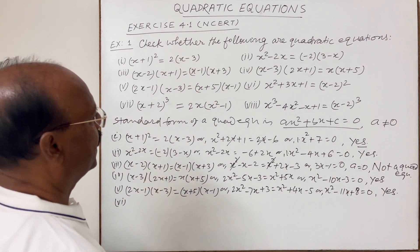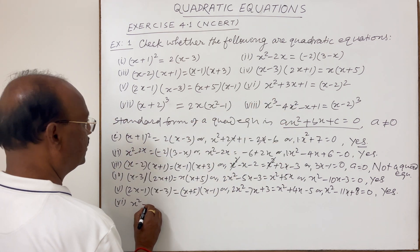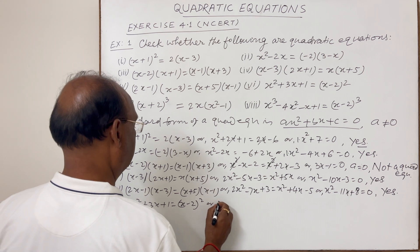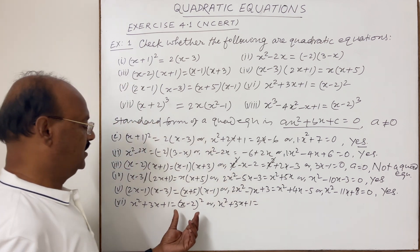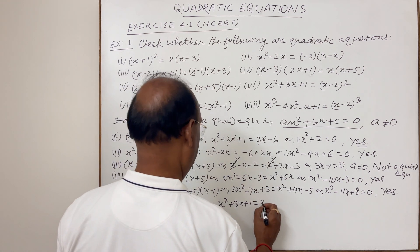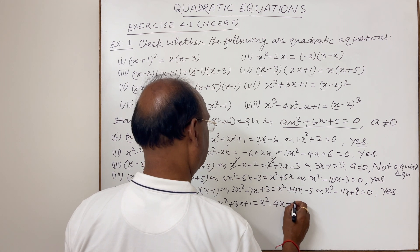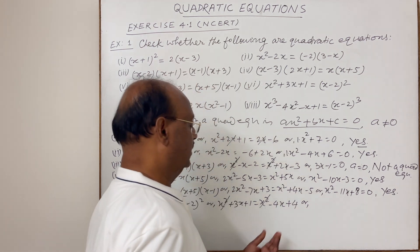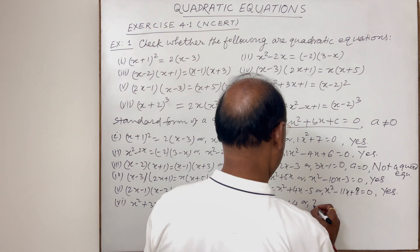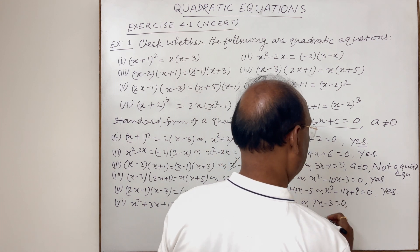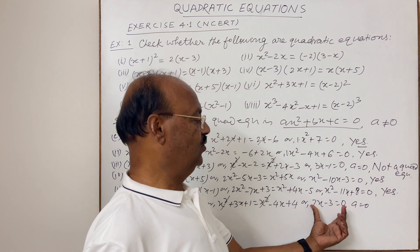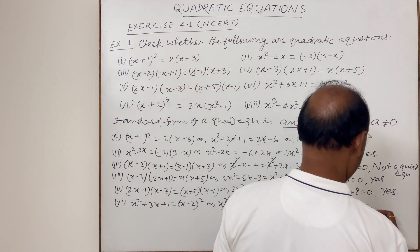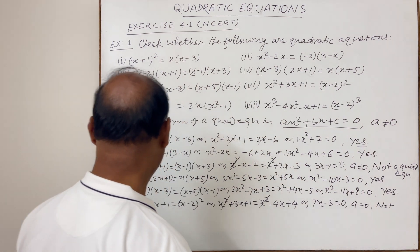Sixth equation: x² + 3x + 1 = (x − 2)². Expanding the right-hand side gives x² − 4x + 4. The x² terms cancel. Transposing remaining terms to the left gives 7x − 3 = 0. Since there is no x² term, a = 0, so this is not a quadratic equation.